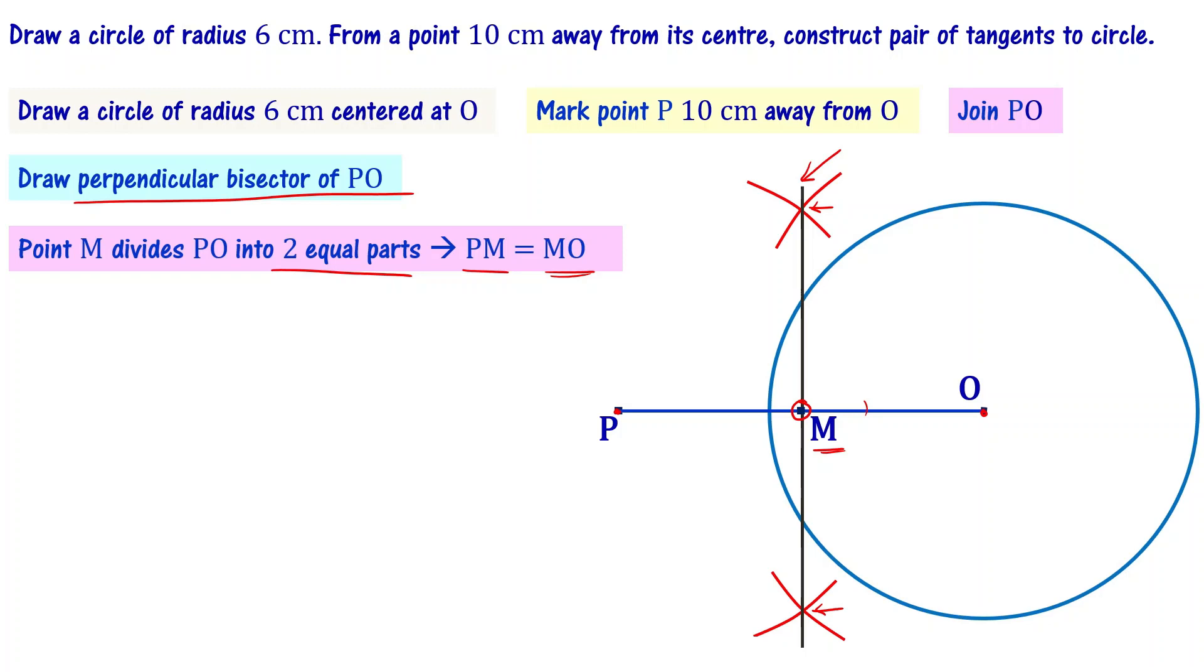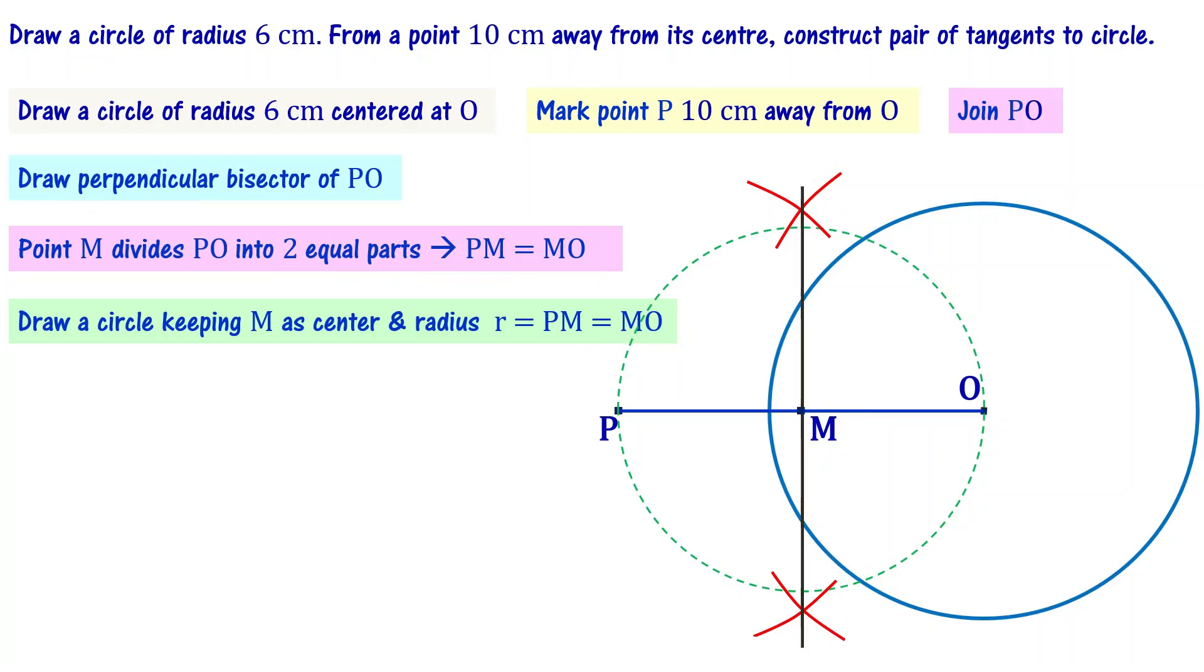Once you have this perpendicular bisector, we have to draw a circle keeping M as the center. You draw a circle. Now, if you look at this, the original circle and the new circle intersect at two points. Let's name them as A and B.